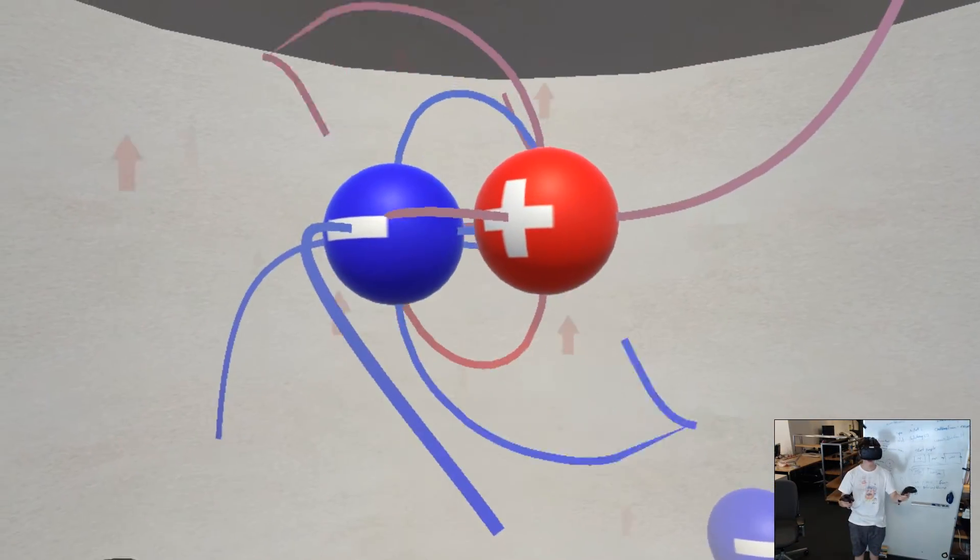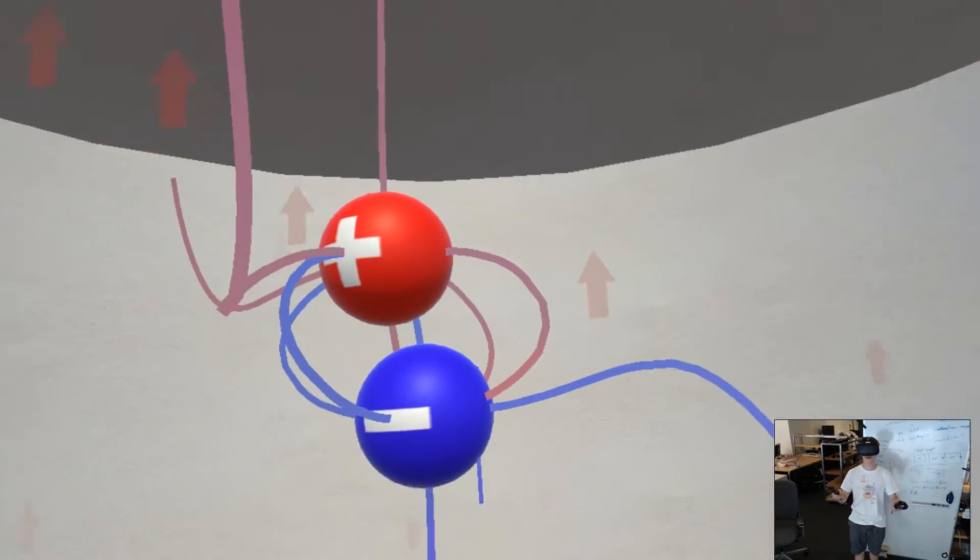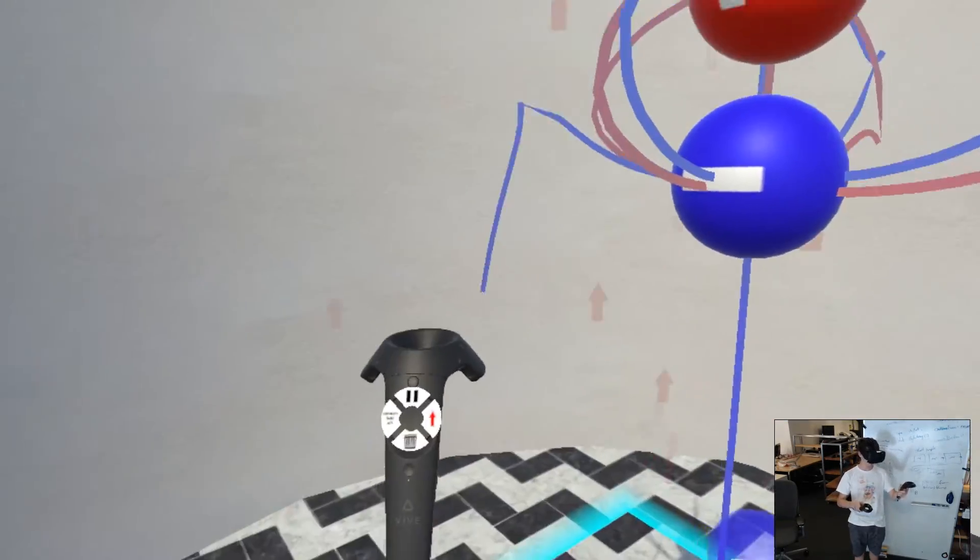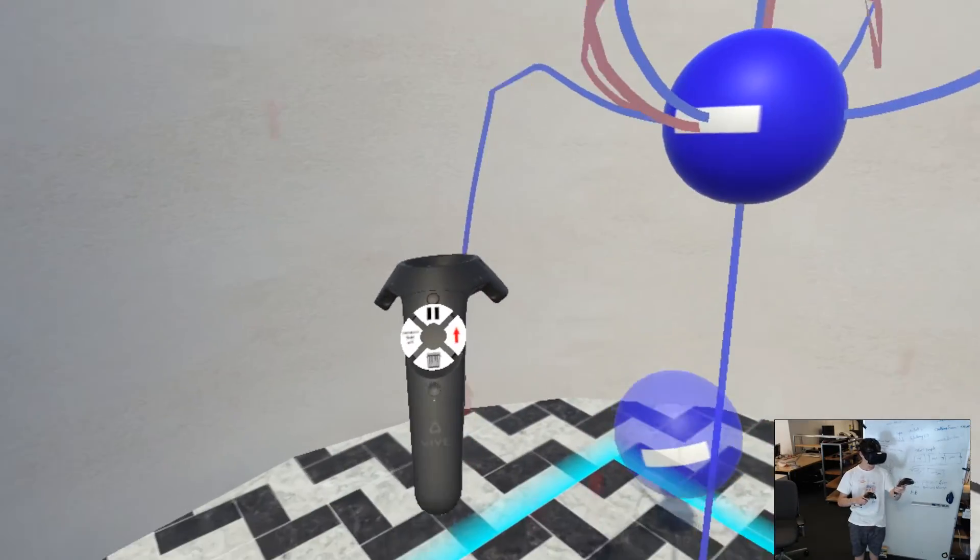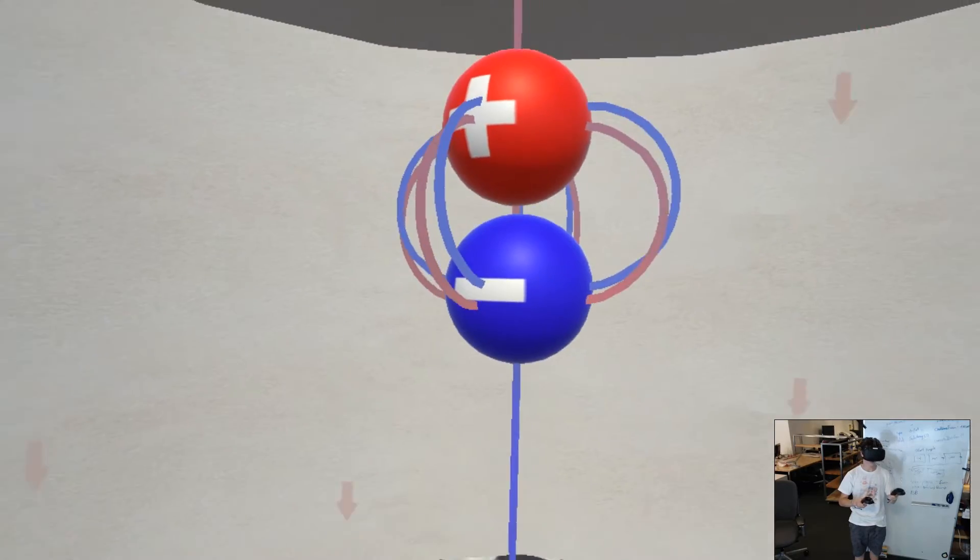Field lines illustrate the structure of the electric field in space. A constant electric field, like the one created by the plates of a capacitor, can be turned on or off and point up or down.